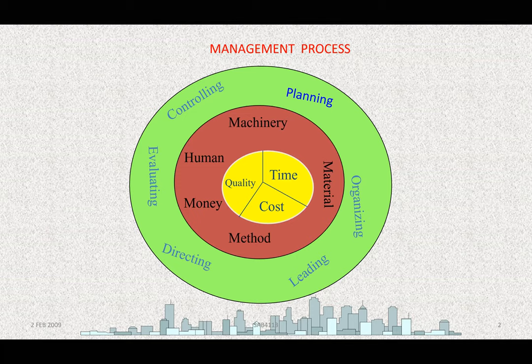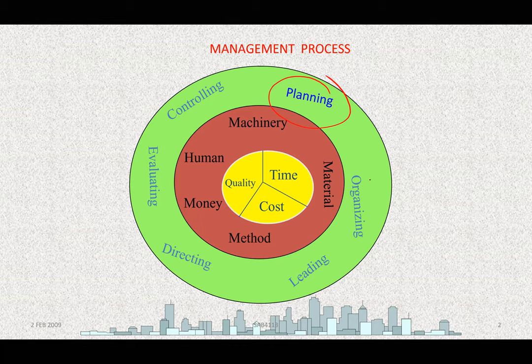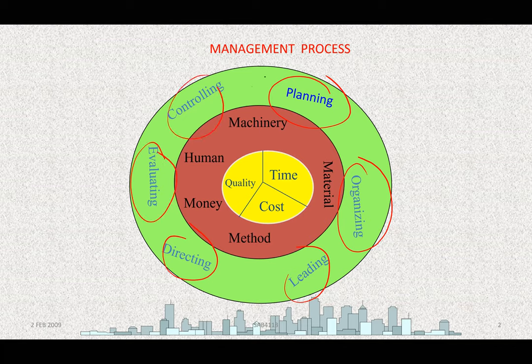The middle circle represents our objective in managing a construction project: what we refer to as the triple constraint — time, cost, quality — or in certain variations, time, cost, scope. We can also add safety and health, legal requirements, and environment. We need resources — the five M's — and we start with the management process. We start with planning, then organizing, and then other things: leading, directing, evaluating, control, and so on.